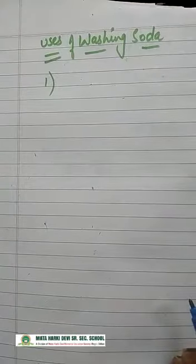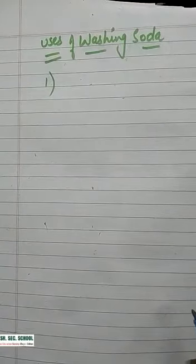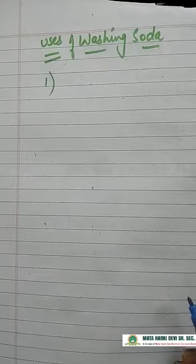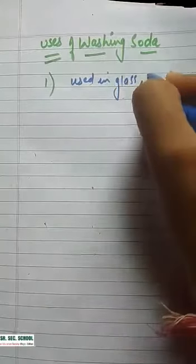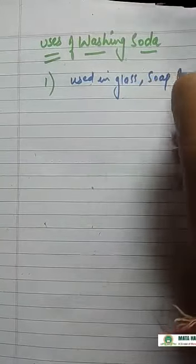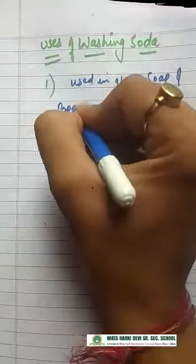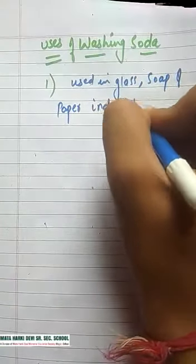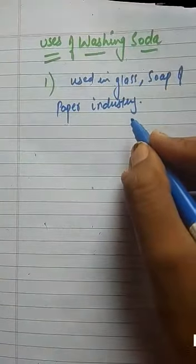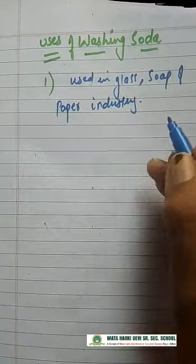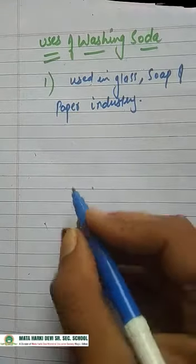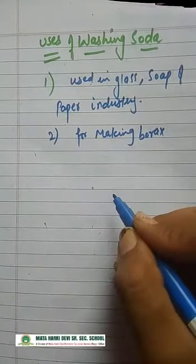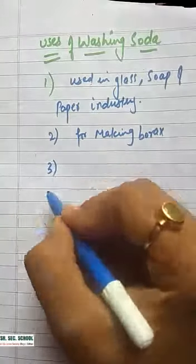What are the uses of washing soda? First, sodium carbonate is used in the glass, soap, and paper industry — most salts find industrial use. Second, it is also used in the manufacture of sodium compounds such as borax.